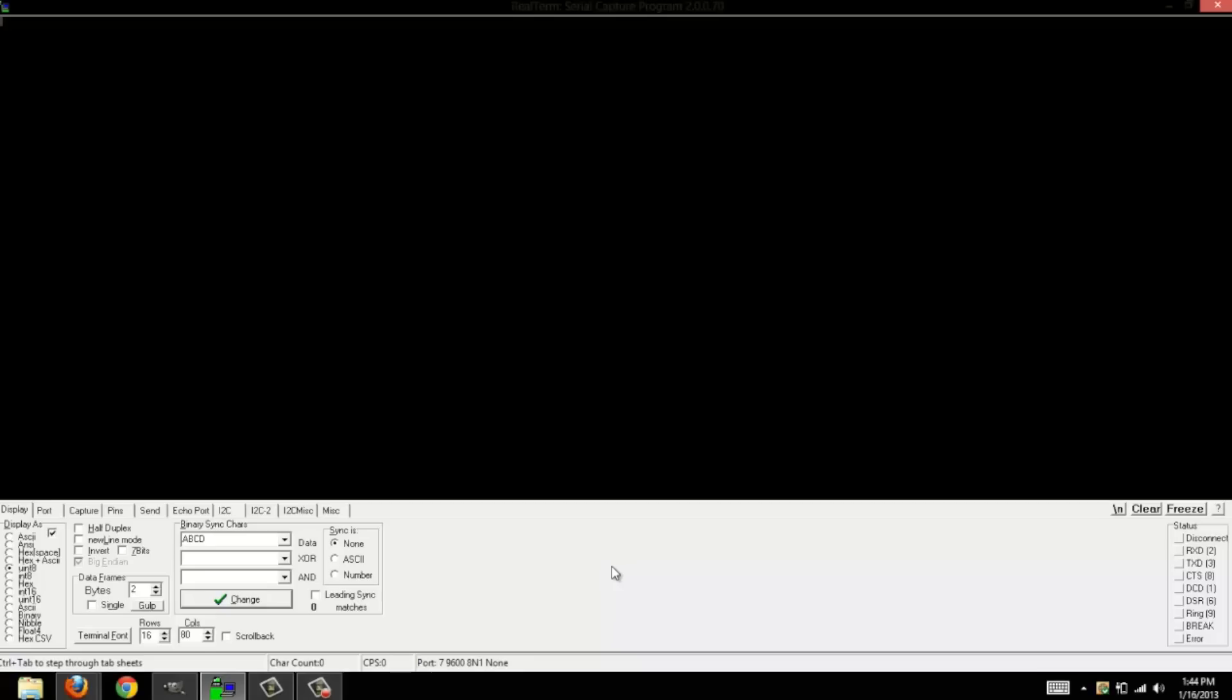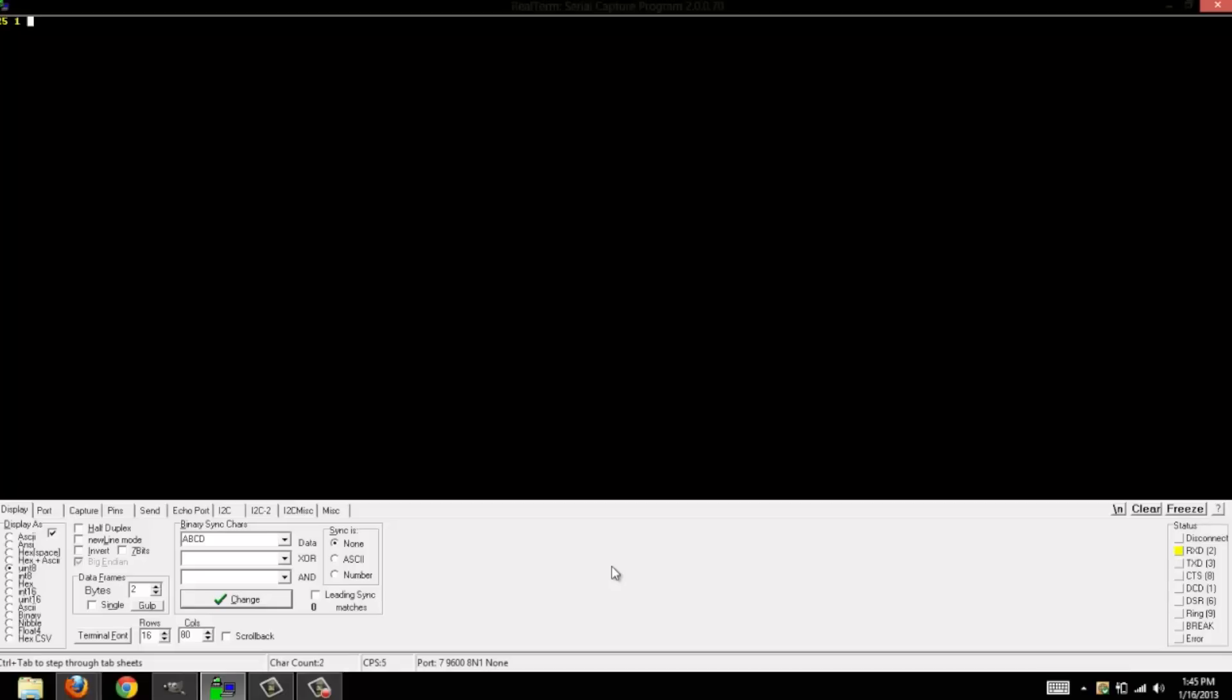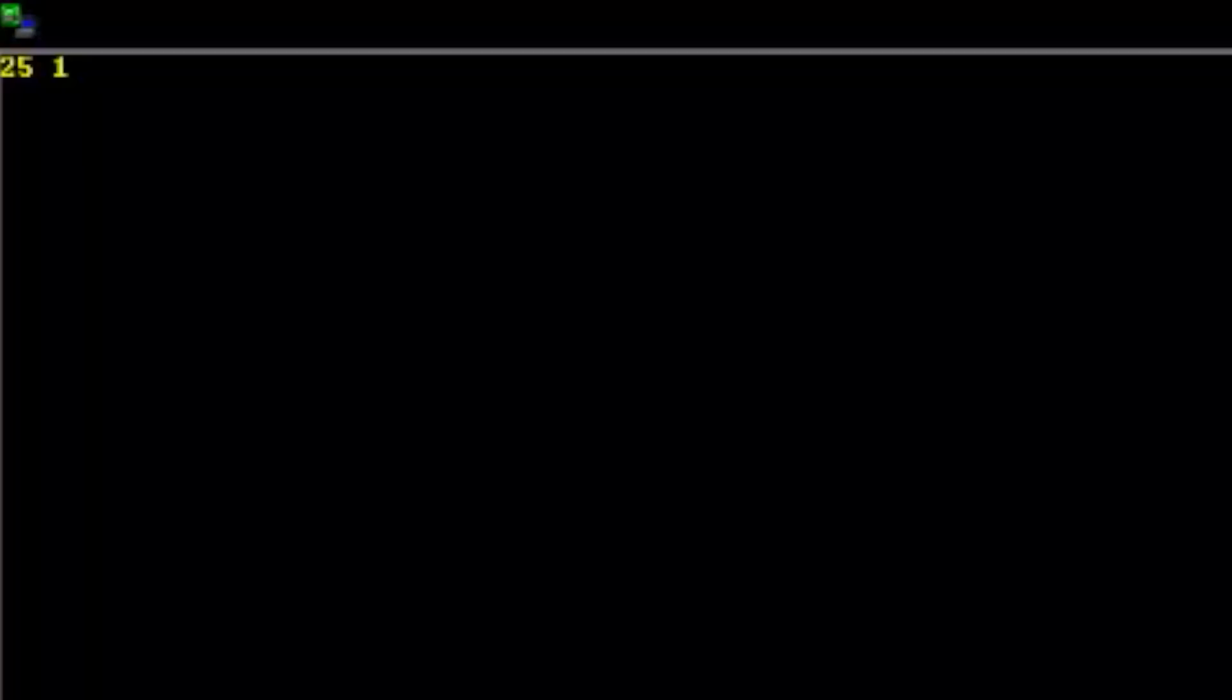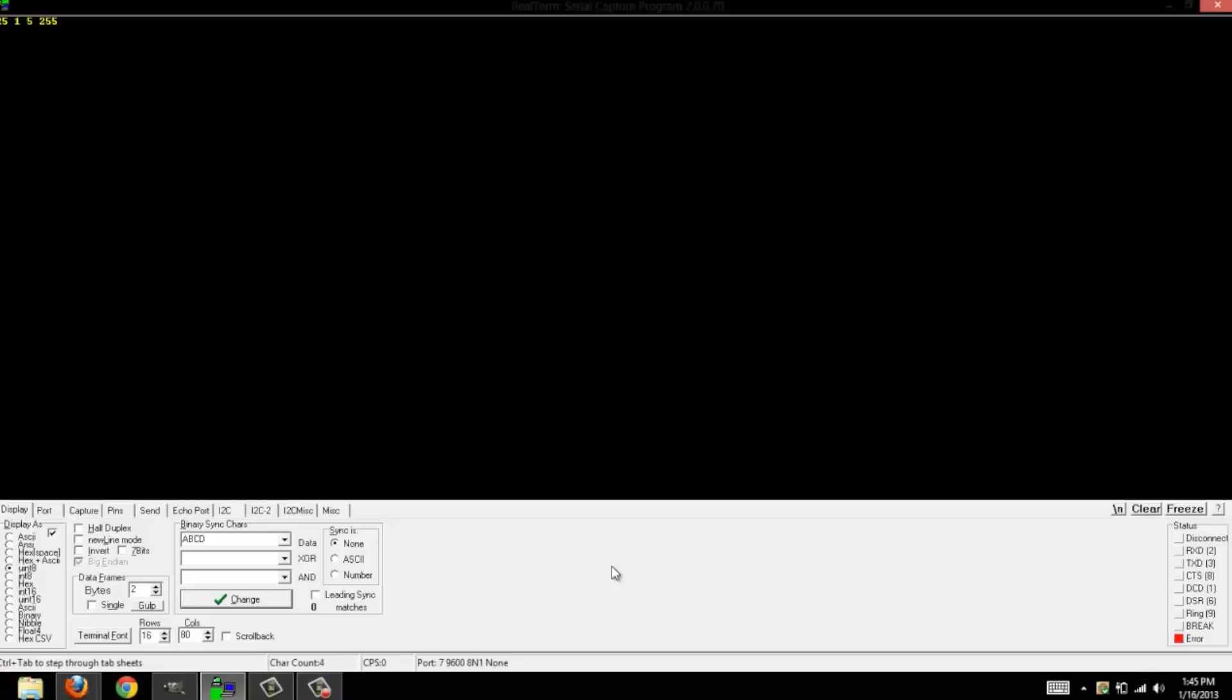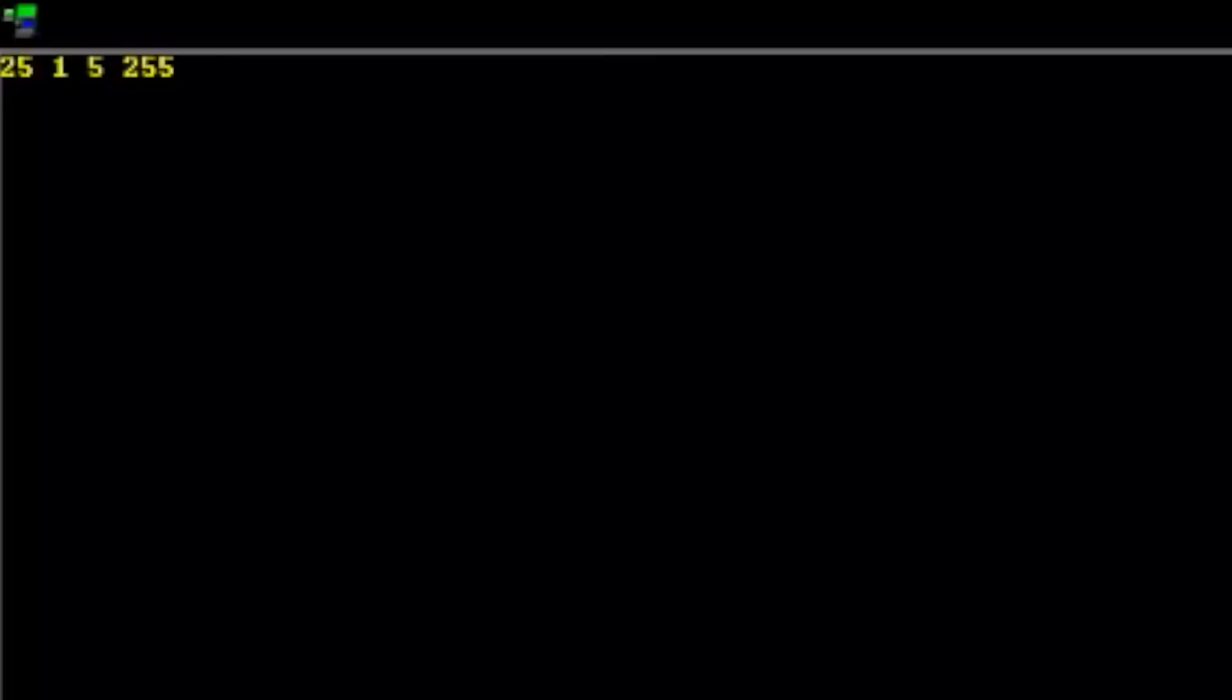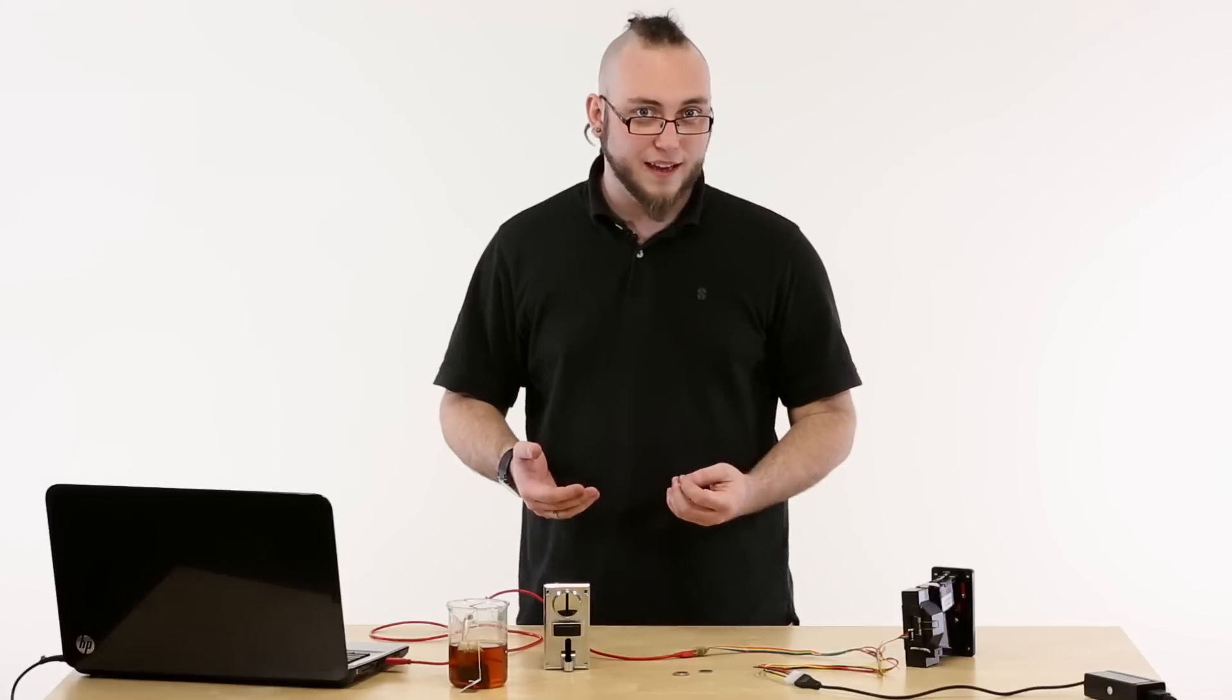We'll start with a quarter here and you can see on the screen we've got a 25 which is the value that I programmed for the quarter. We'll go ahead and move on to a penny. Penny dropped right through and we got a one on the screen. Nickel next. So we got a five and then that was followed by 255. That's an extra byte that comes after some coins are inserted.